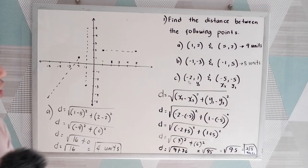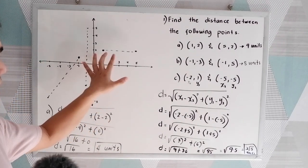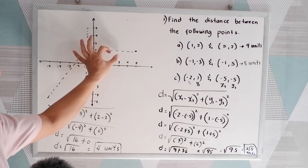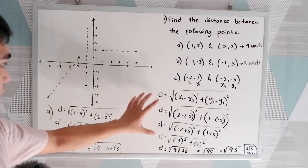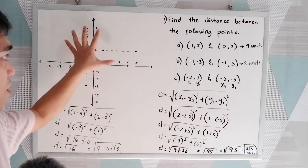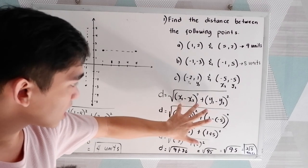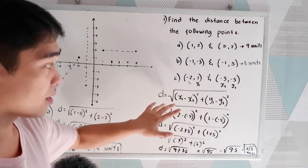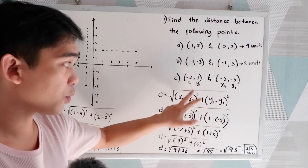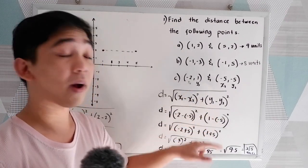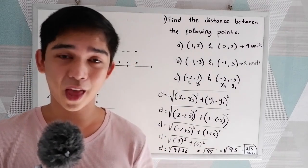So that is the difference in checking. You can use the Cartesian plane and counting if the points are exact, or you can use our formula. But in some cases you cannot use counting — that is why we have the distance formula: d equals the square root of (x₁ − x₂)² + (y₁ − y₂)². That is the application of the formula in our topic.